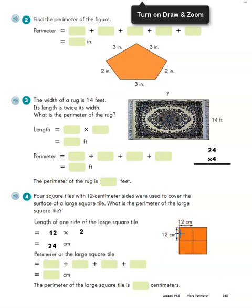In order to find the perimeter, I could do this two ways. I could go 24 + 24 + 24 + 24, or I could just do 24 times 4. To me that seems a little easier, so I'm just going to do my 4 times 4, which is 16. And then 4 times 2 is 8, plus one more is 9. So the perimeter of this large square tile is 96 centimeters.